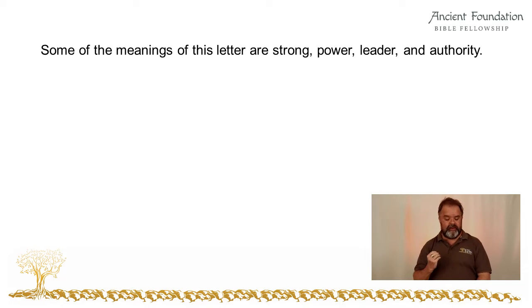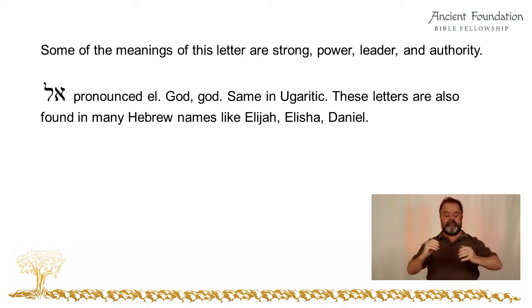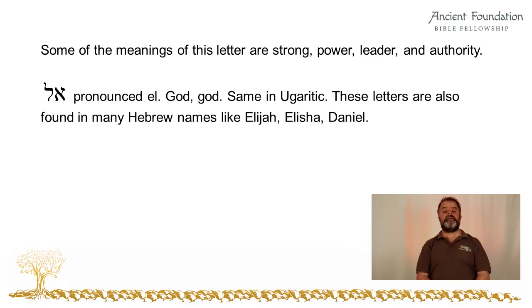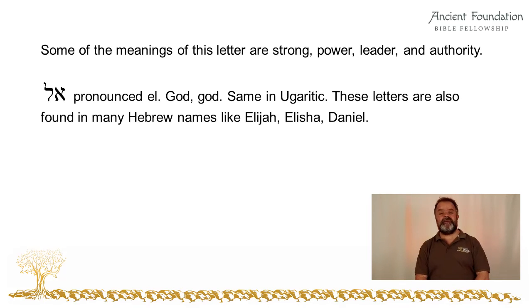Let's look at some Hebrew words that begin with the letter Aleph. Our first word is El, and it means God — as in the one God, or as in little gods, pagan gods. It's the same in Ugaritic. These letters are also found in many Hebrew names, like Elijah, Elisha, and Daniel — you see the 'El' part in many Hebrew names. You just learned your first Hebrew word: El, which is God. You can see that El, God, is the authority, the strong one, he's above all.